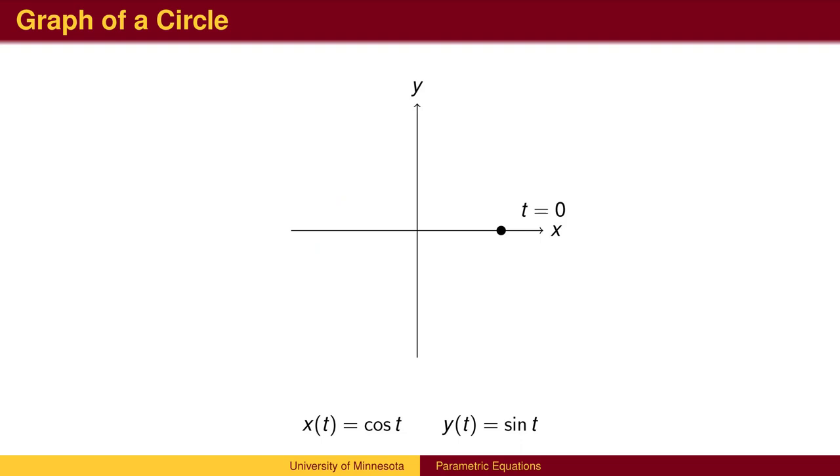Another approach is to imagine the graph being drawn by a particle moving in the plane through time. We define the x and y coordinates separately as functions of time. This allows our graph to move back and forth, left and right. For the circle, we have a simple solution.